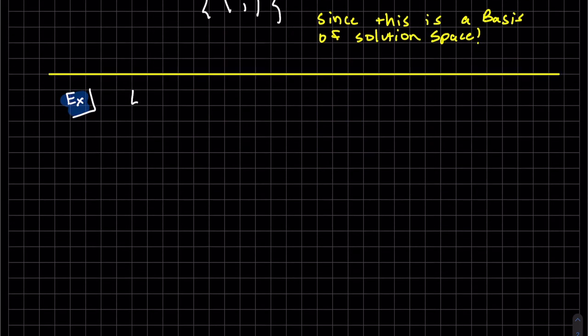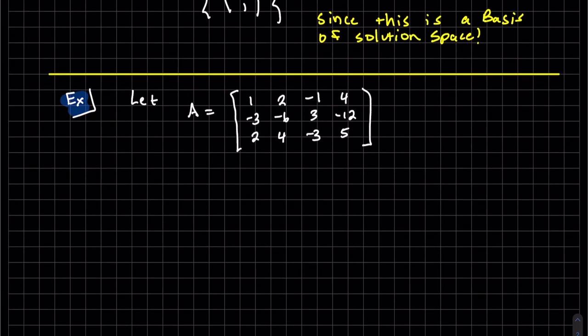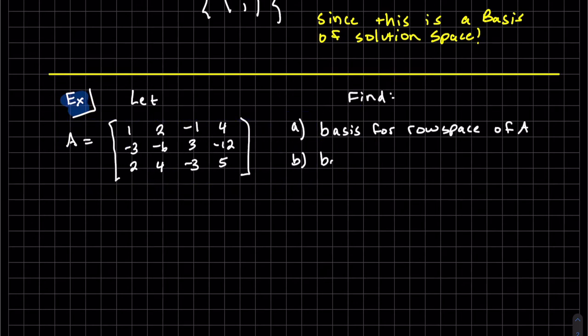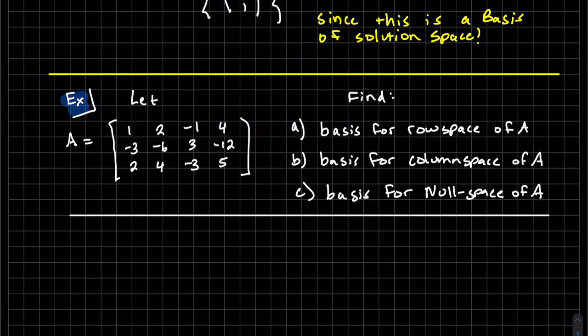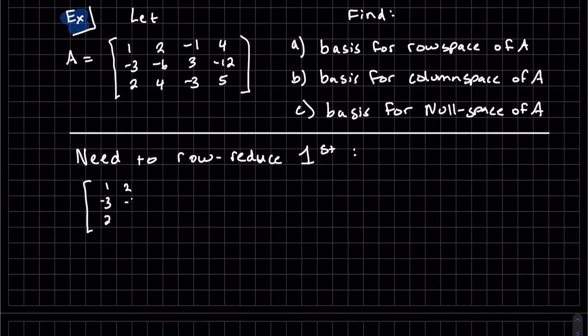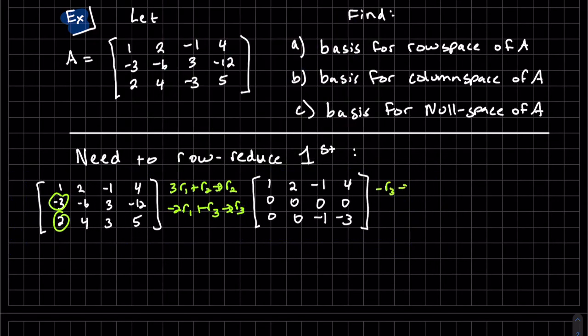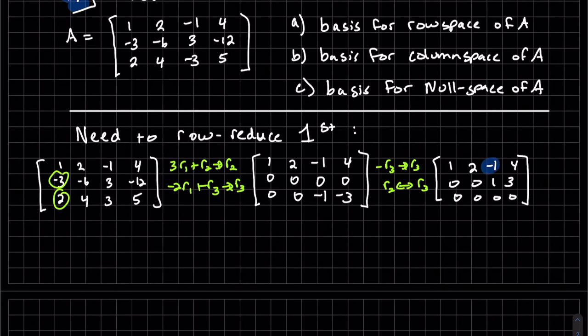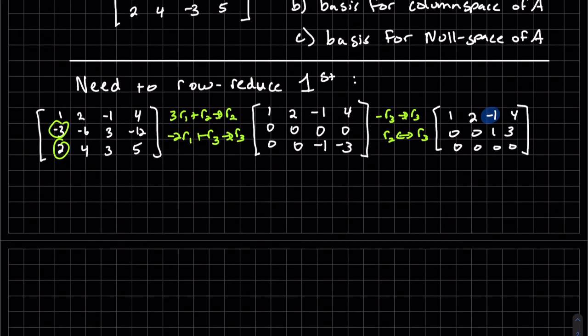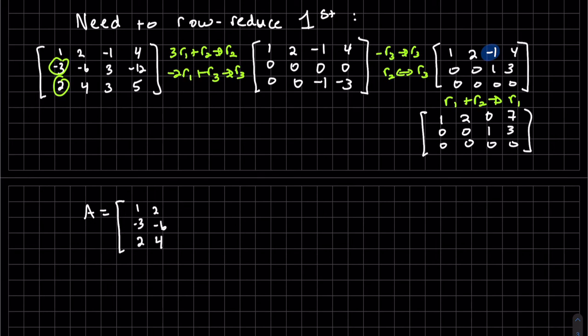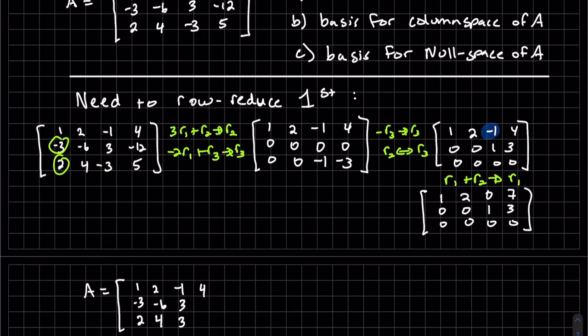So let's do another example. Now, word of caution here, you probably want a zero there so that you don't make any mistakes when we're finding the null space. So one more step. There was a negative there, but the work is right.